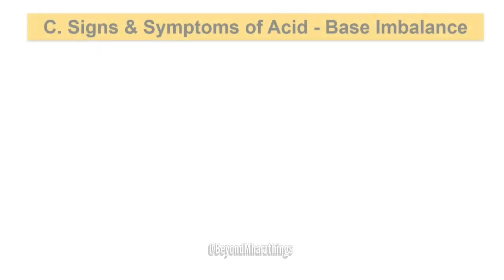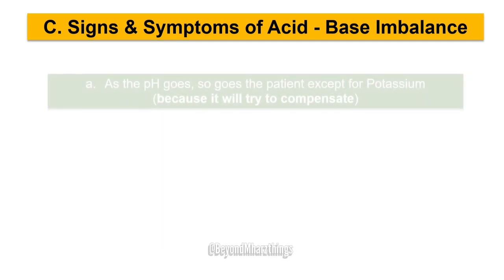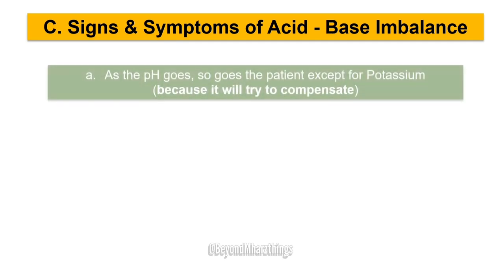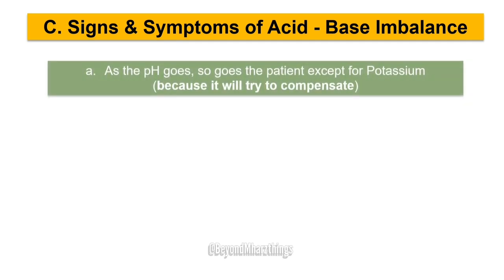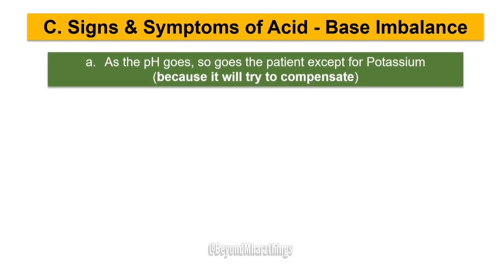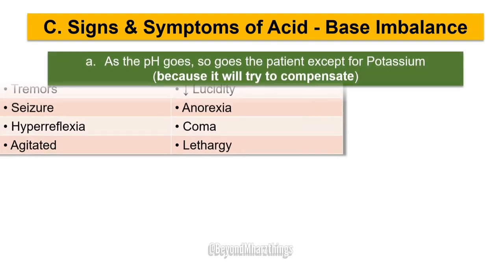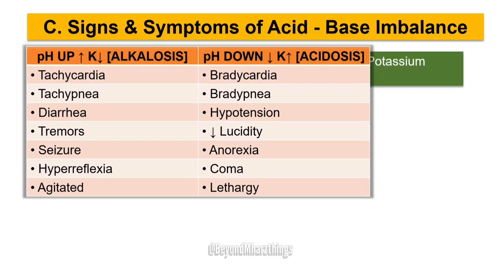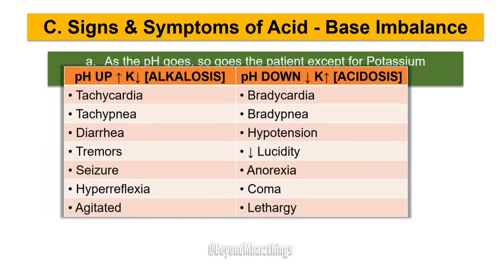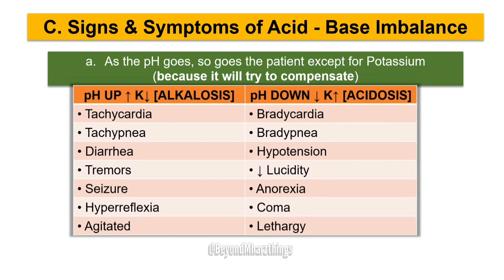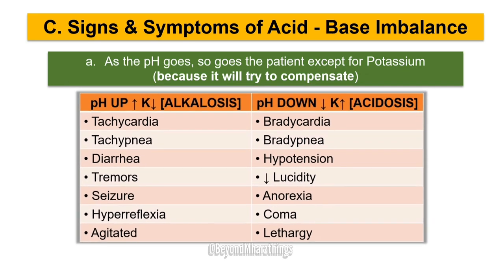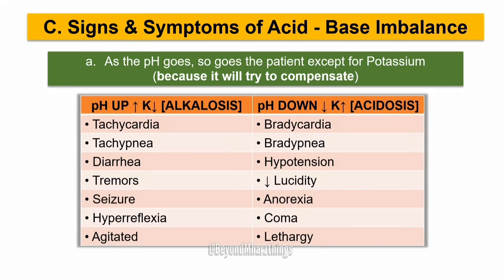Signs and symptoms of acid-base imbalance. A: As the pH goes, so goes the patient — except for potassium, because it will try to compensate. pH is up and K is down: Alkalosis. pH is down and K is up: Acidosis. Common signs include tachycardia.